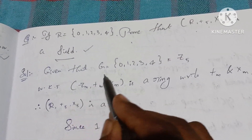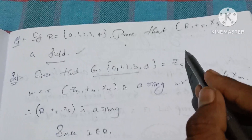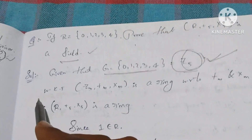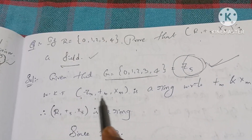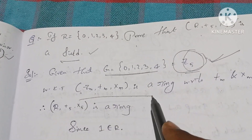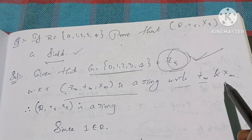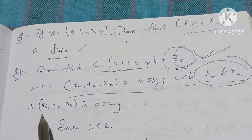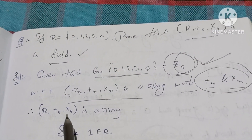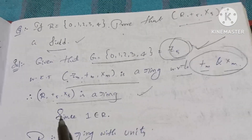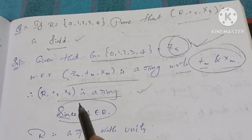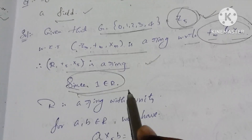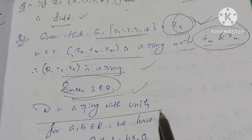Solution: Given R equals Z5. We know that Zm with respect to +m and ×m is a ring. Therefore, (R, +5, ×5) is a ring. Since 1 belongs to R, R is a ring with unity.